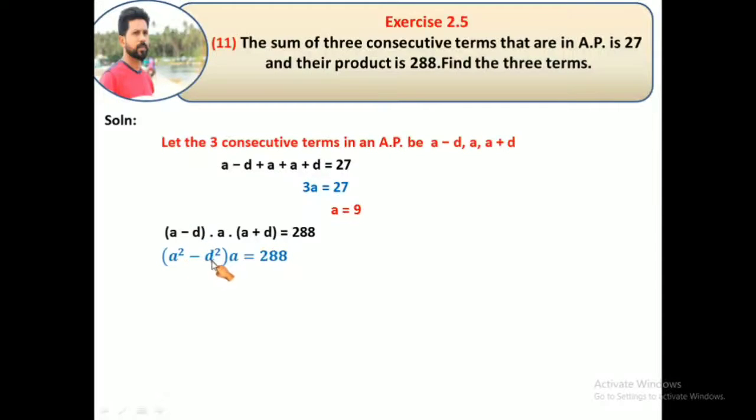We already know the value of a, so substitute: (9² - d²) × 9 = 288. That's (81 - d²) × 9 = 288. Bring the 9 to the other side: 81 - d² = 288/9 = 32.